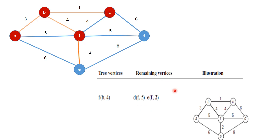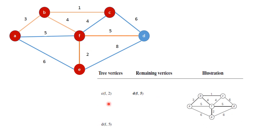E is added into the tree vertices. Now A, B, C, F, and E are in the tree vertices. The only remaining vertex is D. D is closest to F with a minimum distance of 5, so F is the near vertex and minimum edge distance is 5. Since D is the only remaining vertex, it is added, and the D-to-F edge is highlighted.